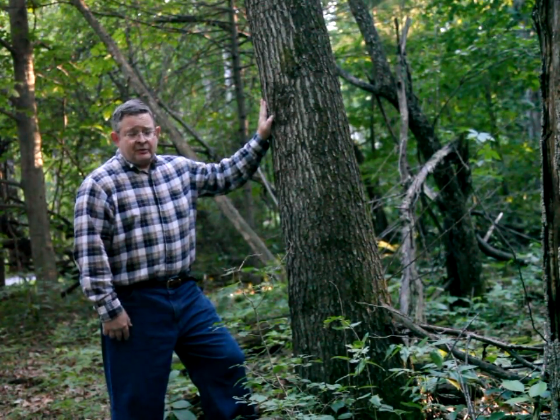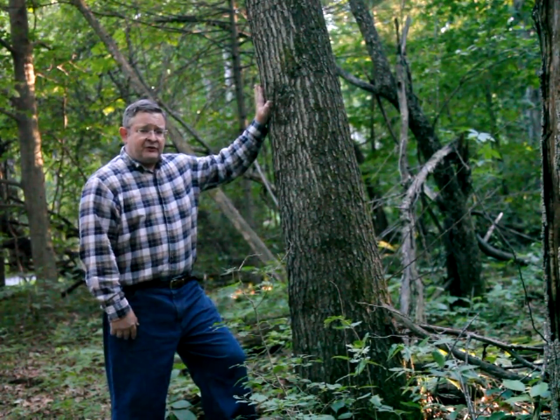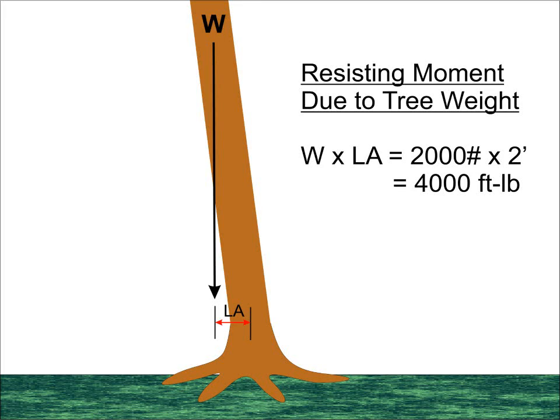Up to this point, we haven't considered what moment it will take to pull our tree over. The most obvious resisting moment will be the mass of the tree itself. Assuming our tree weighs 1 ton, and that weight is centered 2 feet behind the center of the stump, the resisting moment will be 2,000 pounds times 2 feet, or 4,000 foot-pounds, more than what our guy can apply. However, it gets worse.